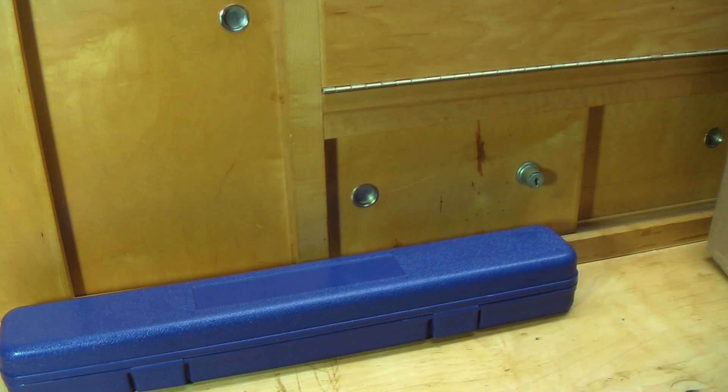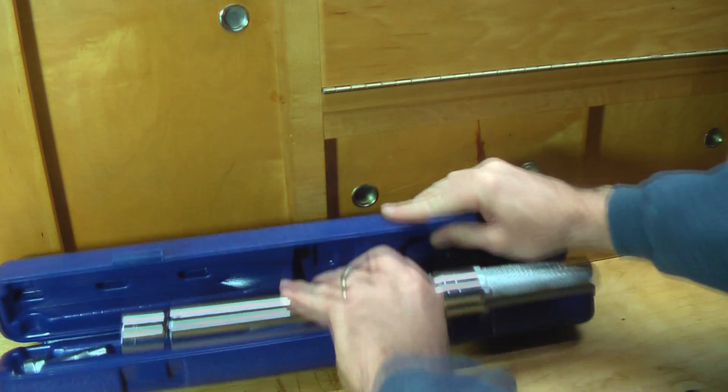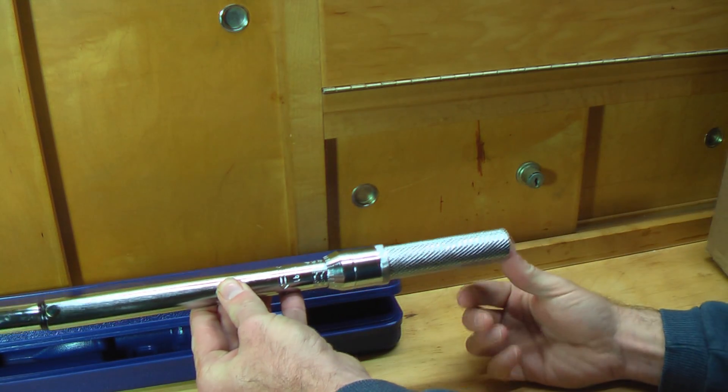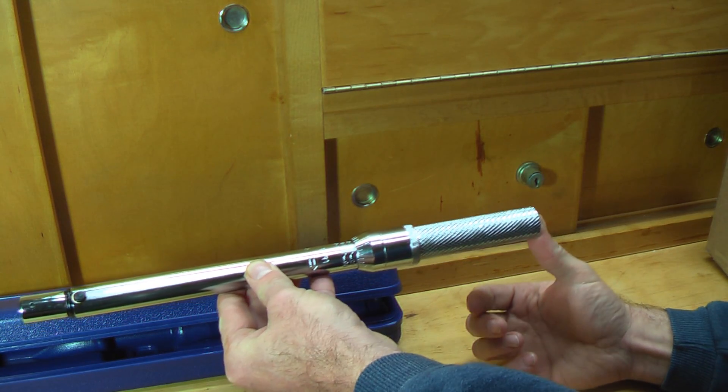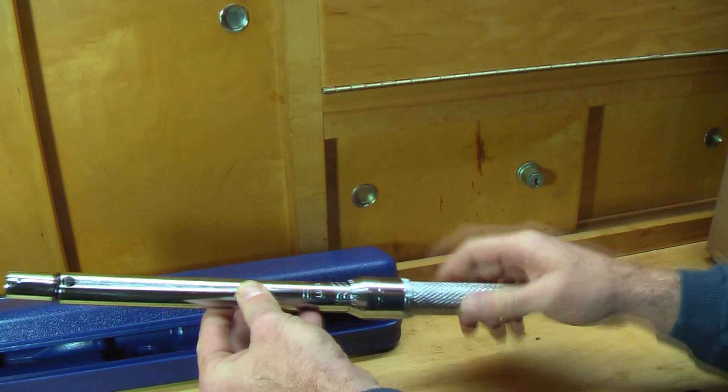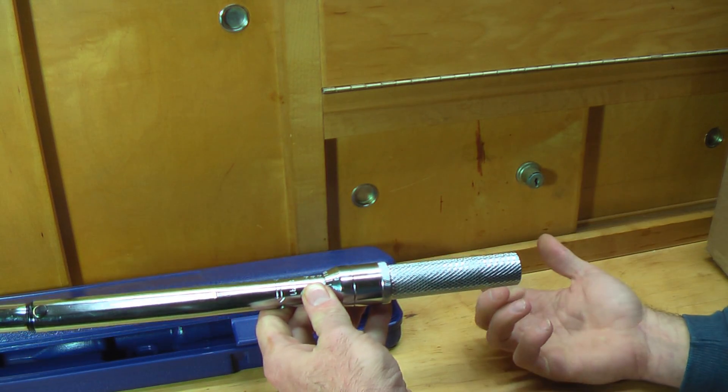We'll go with the consistent crimp first. What the consistent crimp is is a torque arm that replaces or works adjacent to the arm under reloading press. You set the torque on it in order to apply crimp.